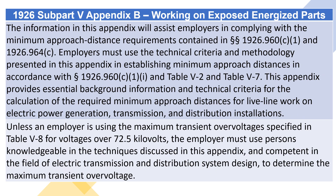The information in this appendix will assist employers in complying with the minimum approach distance requirements contained in Sections 1926.960(C)(1) and 1926.964(C). Employers must use the technical criteria and methodology presented in this appendix in establishing minimum approach distances in accordance with Section 1926.960(C)(1) and Table V-2 and Table V-7. This appendix provides essential background information and technical criteria for the calculation of required minimum approach distances for live-line work on electric power generation, transmission, and distribution installations.